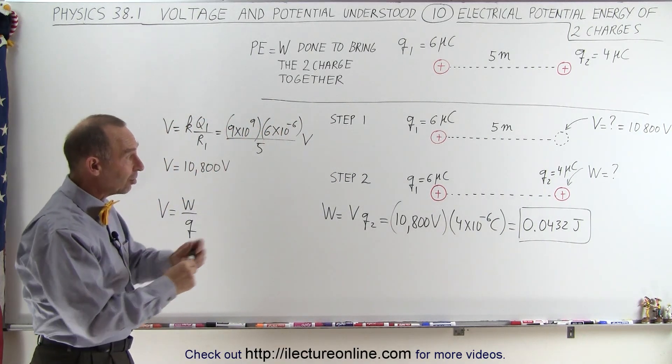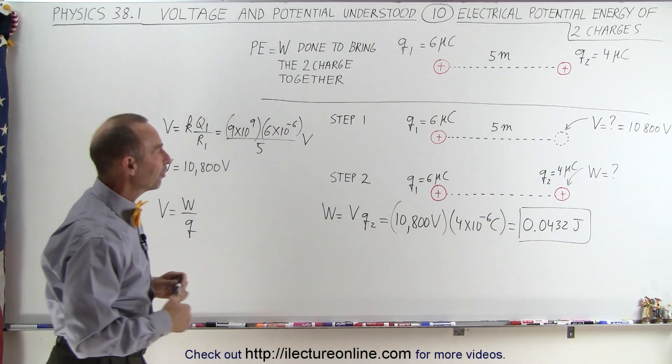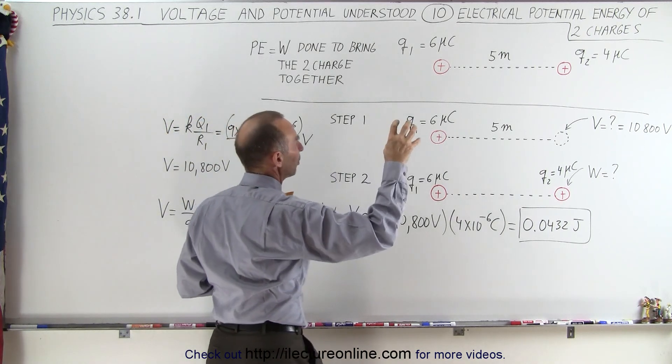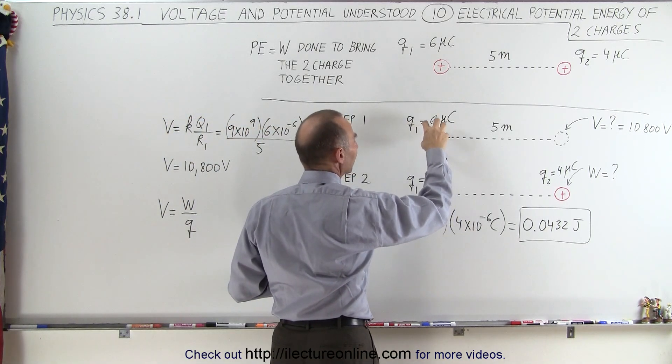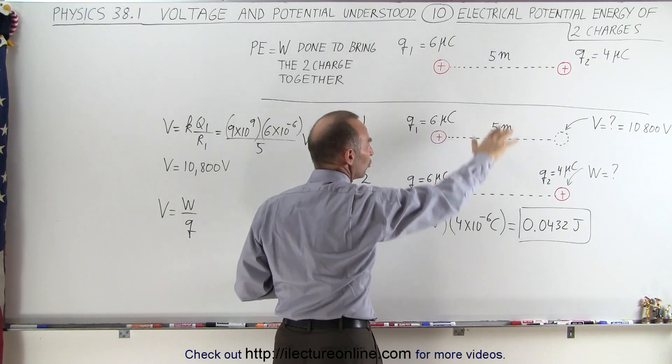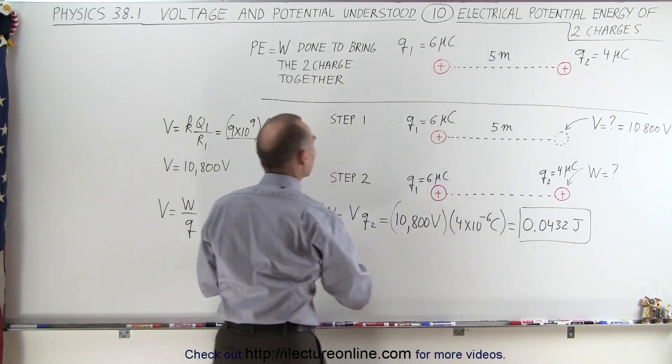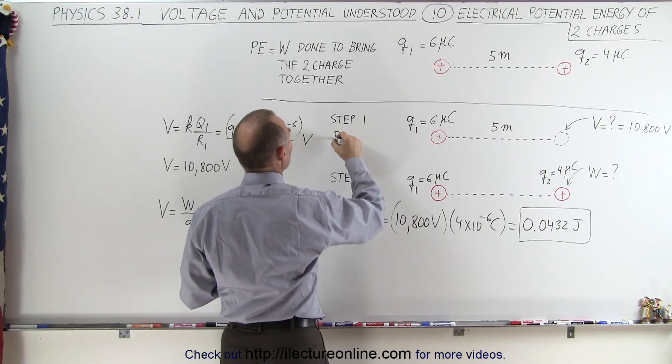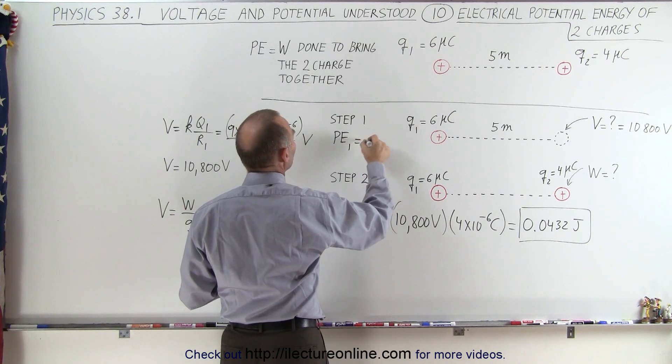Now for the potential energy of that system. First of all, during step 1, since we just put one single charge there, it takes no work at all to place it there, there's no potential anywhere else nearby, no electric fields, so the potential energy for step 1 is equal to 0.